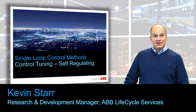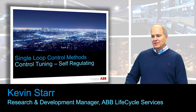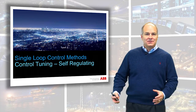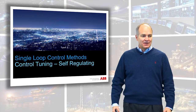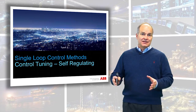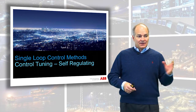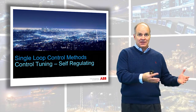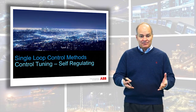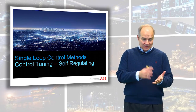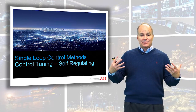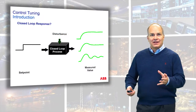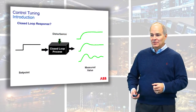This video series is on single loop control methods tuning. We're finally up to tuning — we're going to talk about how to tune a self-regulating process. Several episodes ago we talked about the process and how to identify it, then we talked about the controller: proportional, integral, derivative. Now we're going to talk about how we link these together, to the point where you can actually tune something.